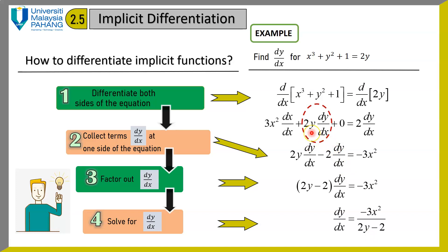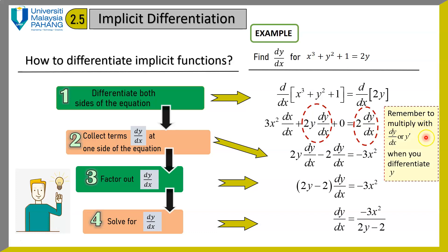Be careful: when you differentiate your dependent variable, remember to multiply with its derivative dy/dx. The same applies to the right hand side — when you differentiate the dependent variable in implicit differentiation, you must multiply back with the derivative. Remember to multiply with the derivative of your dependent variable, in this case y.